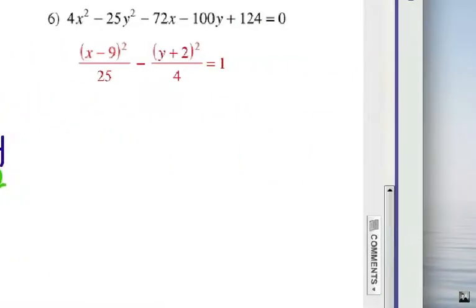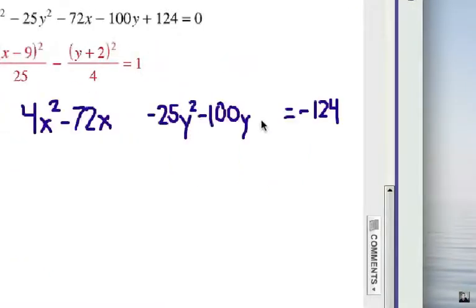All right, number 6. Here's how we got that answer. We're going to group the x terms and the y terms together and get the constant on the other side. So now it's negative 124.